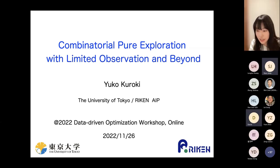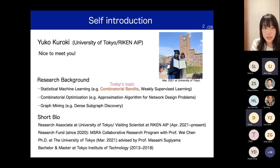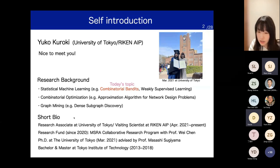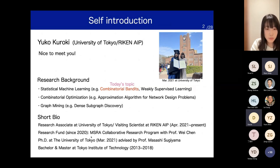I'm Yuko Kuriki from the University of Tokyo. Thank you very much for having me today. It's a precious opportunity. My research background includes statistical machine learning, combinatorial optimization, and graph mining. Since 2020, I am supported by the Microsoft Research Asia Collaborative Research Program, where I was fortunate to collaborate with Professor Wei Chen. Today, it is a great honor to give a talk about work on combinatorial bandit with limited feedback.